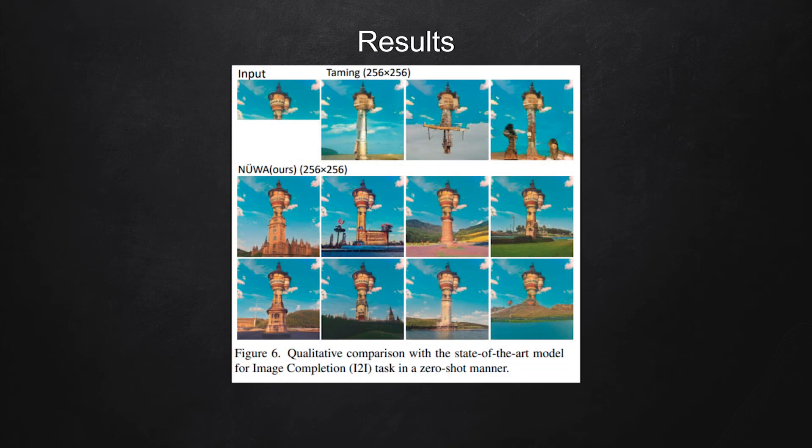This is the result in image completion task. The model takes an incomplete image as input as shown here. Half of the image is masked. Given that as input, the NEWA model tries to generate realistic images as shown in these two rows.